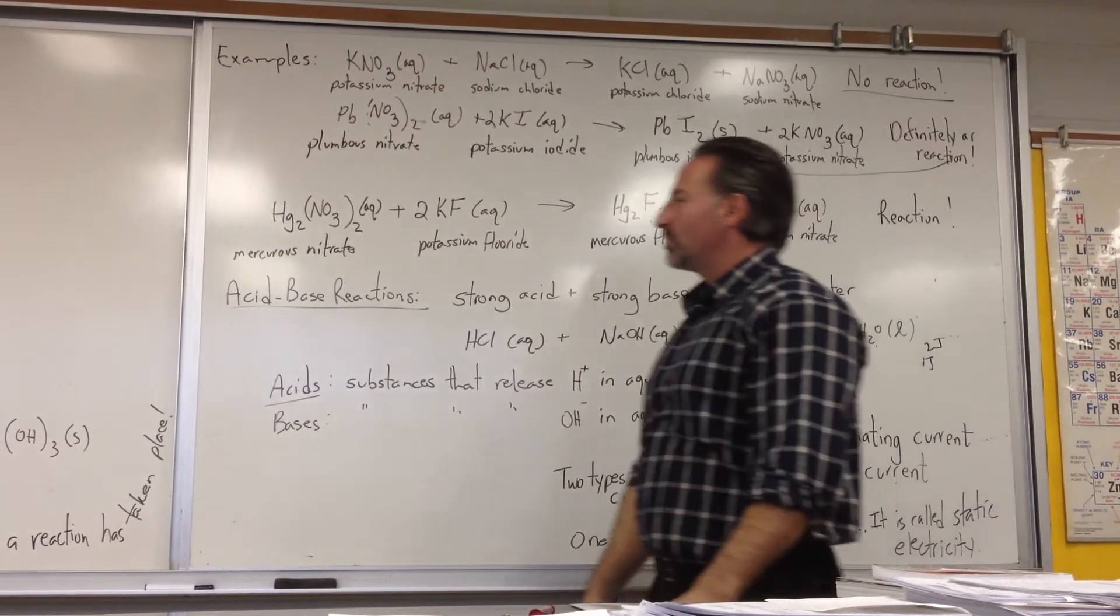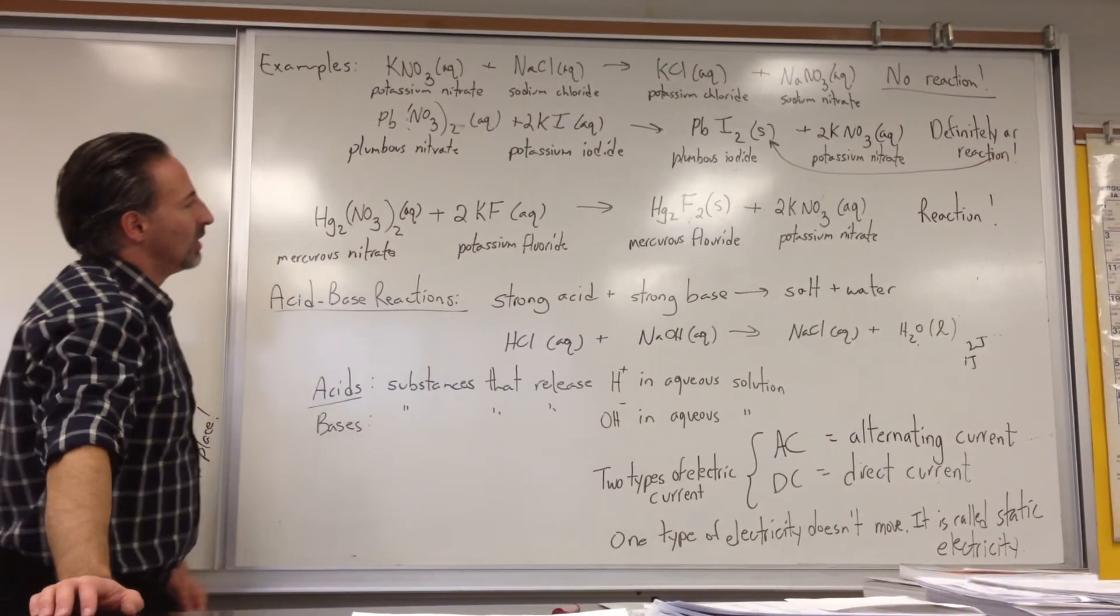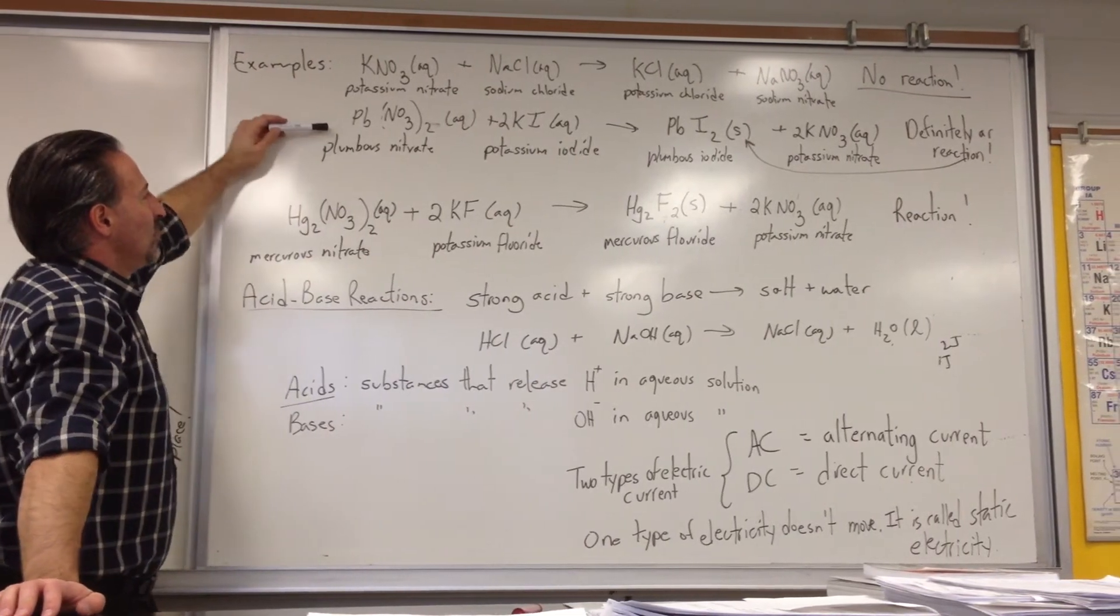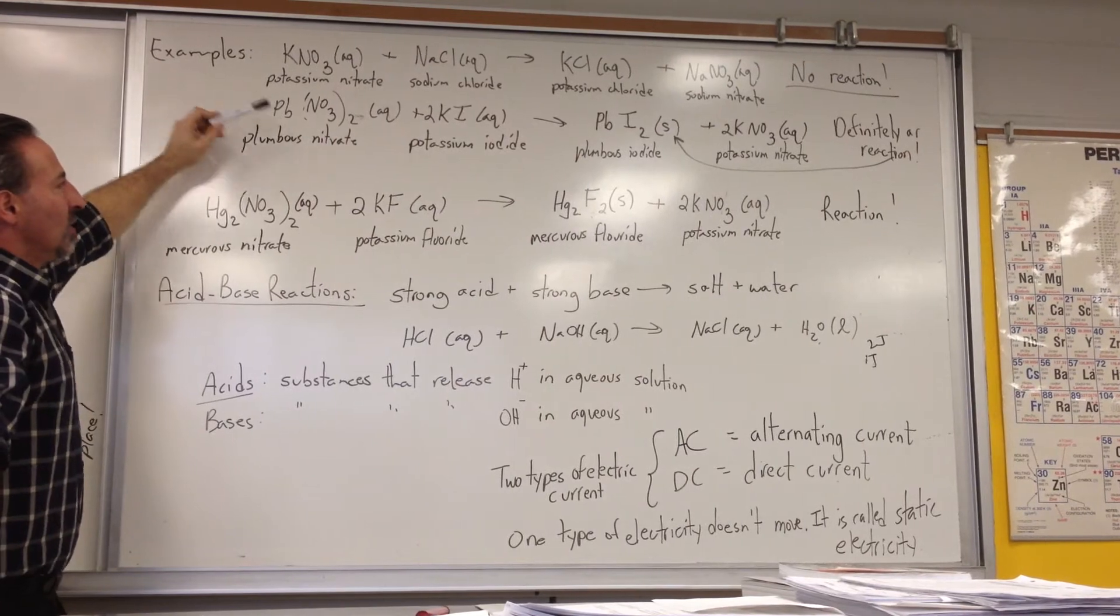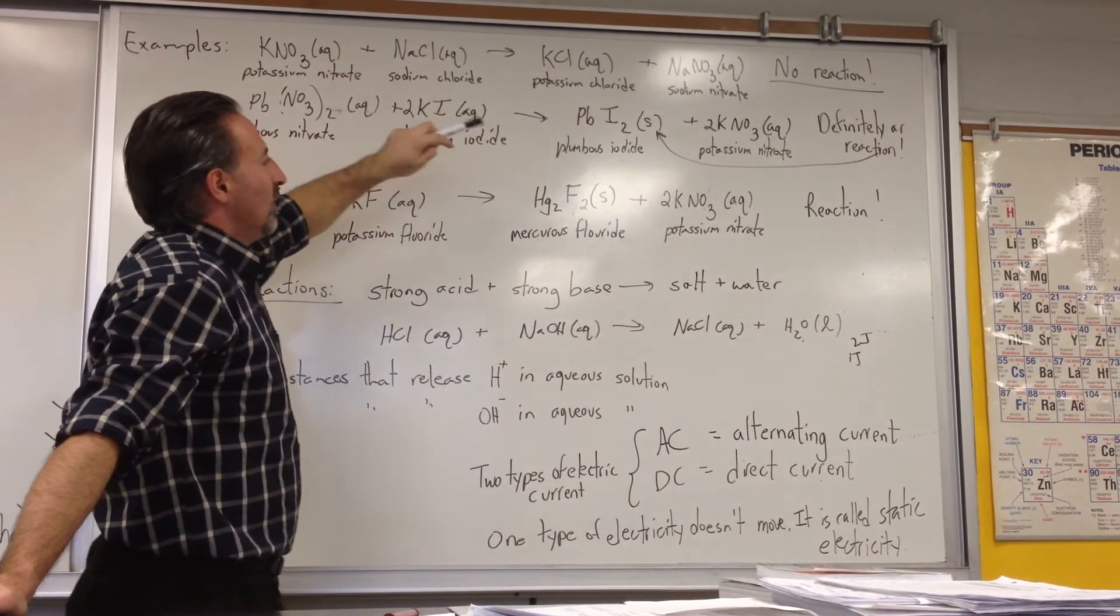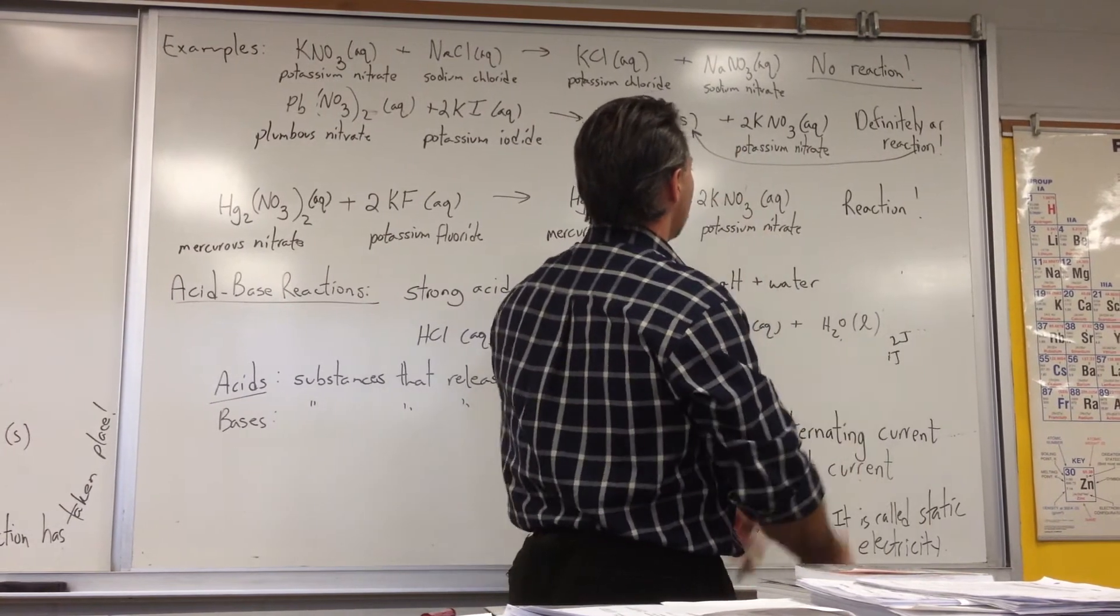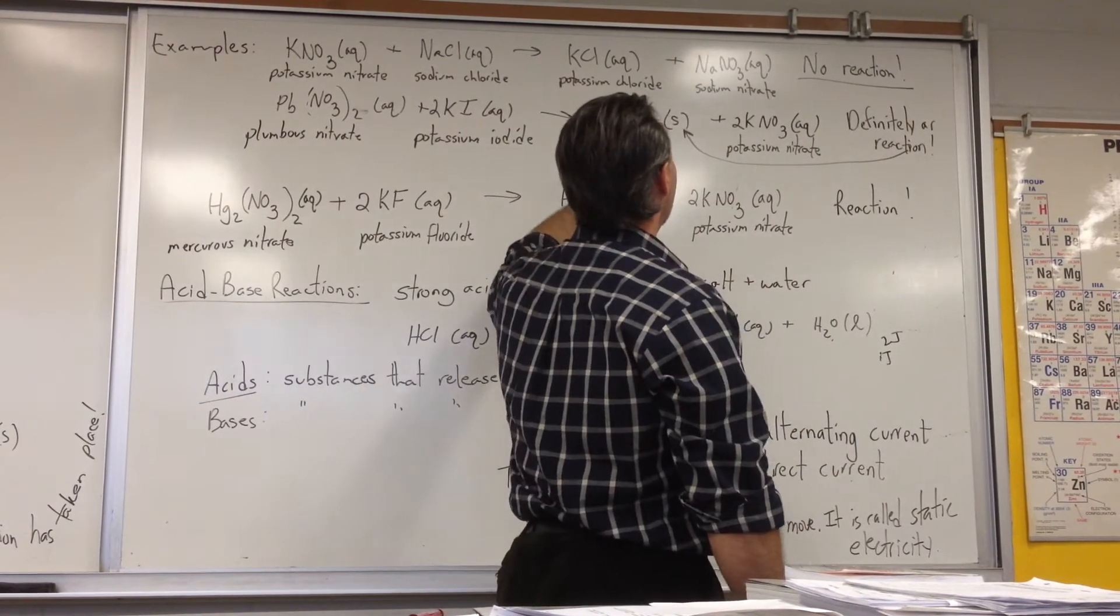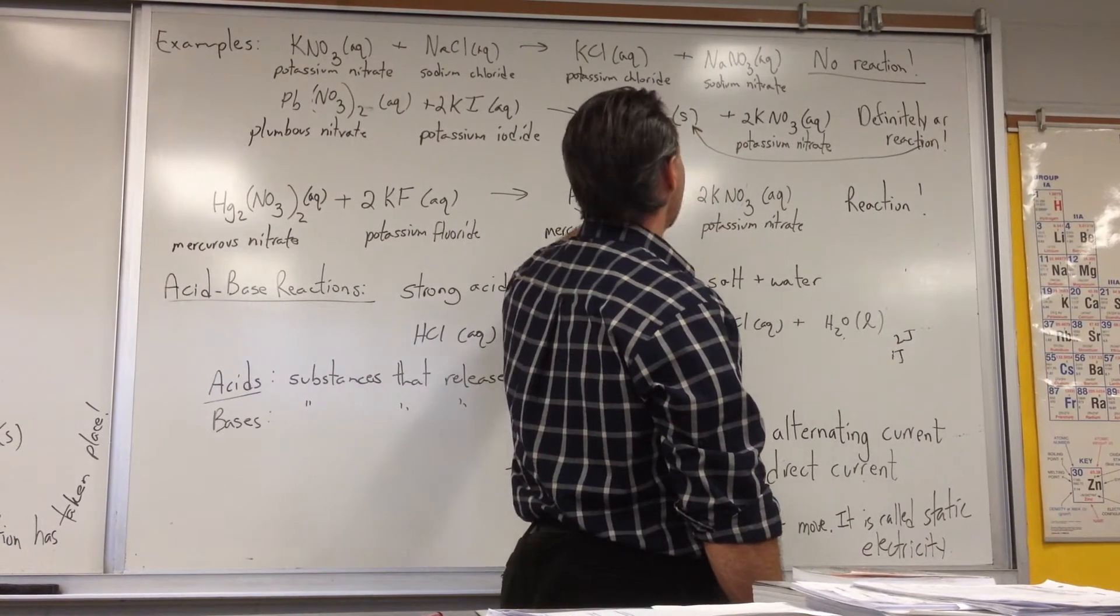But now let's look at an example of a classic reaction that's used to illustrate a double displacement reaction. When you mix plumbus nitrate, lead to nitrate, with potassium iodide, you do get a reaction. You get a yellow precipitate forming that then falls to the bottom of the beaker. And then the top of the beaker is clear. The rest of the beaker is a clear solution. What is that yellow precipitate?